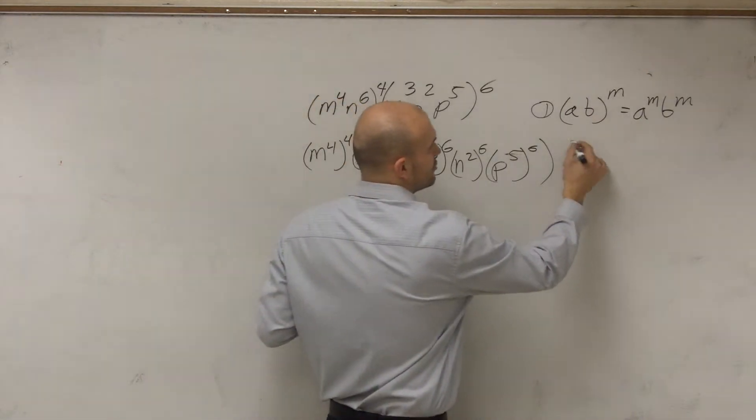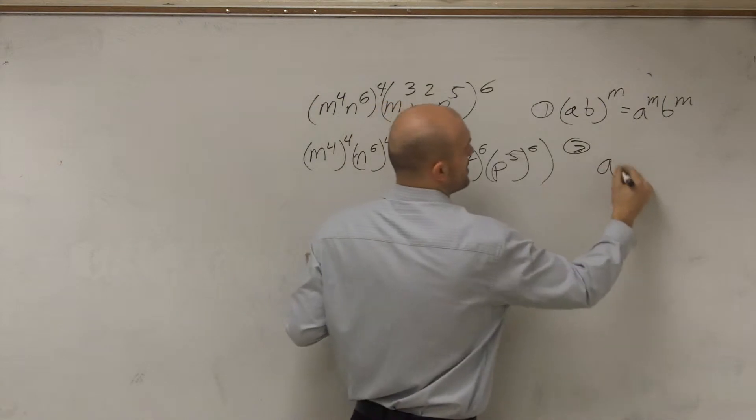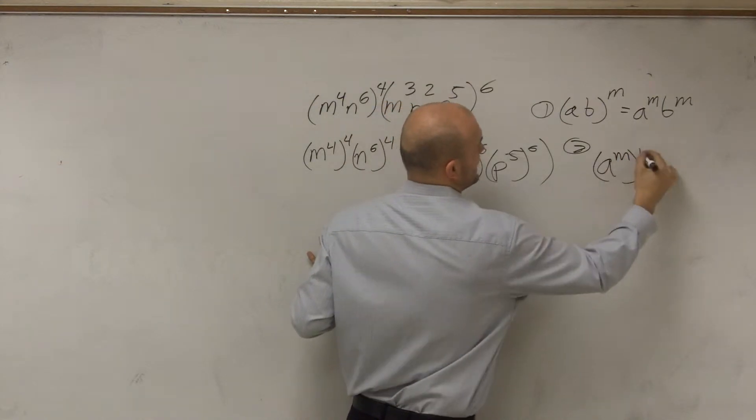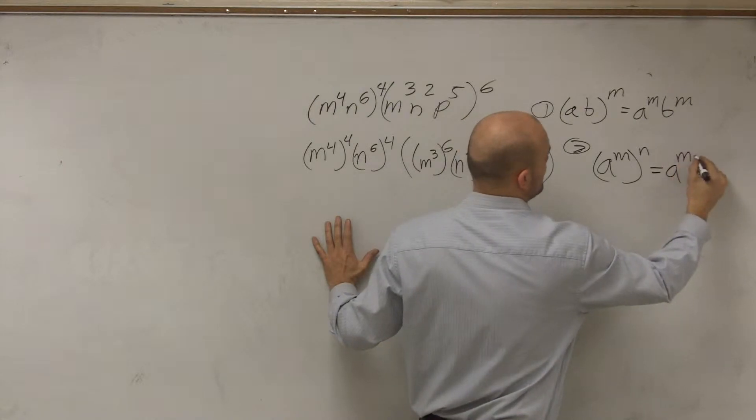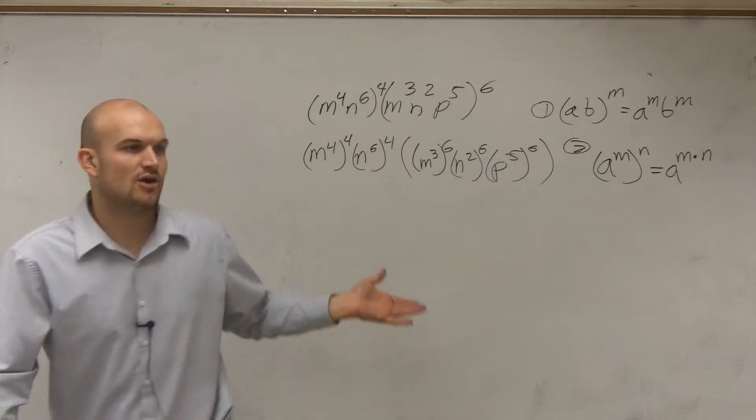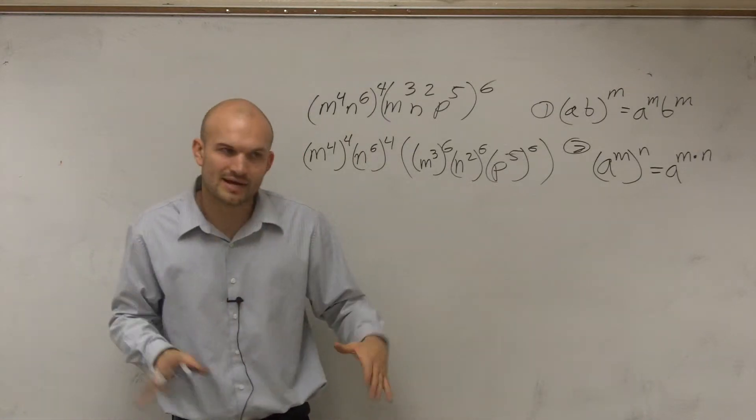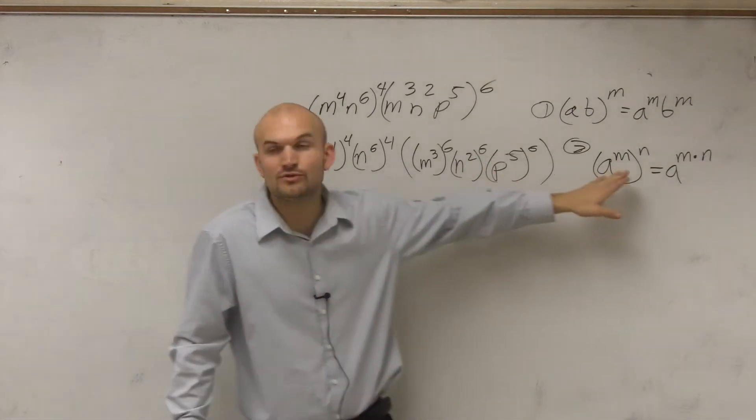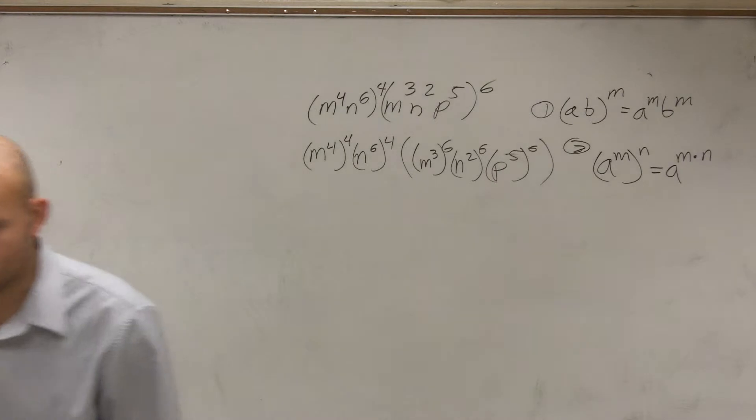The next property is going back to that multiple, oh, I'm sorry, is the power of power, which states if you have a to the m raised to the n power, that equals a to the m times n. And this is what everybody gets wrong with the product property is they always want to say, oh, when you multiply exponents, you multiply the exponents, right? Well, in reality, you're only adding the exponents. But when you raise an exponent to another exponent, this is when you're going to multiply them, OK?